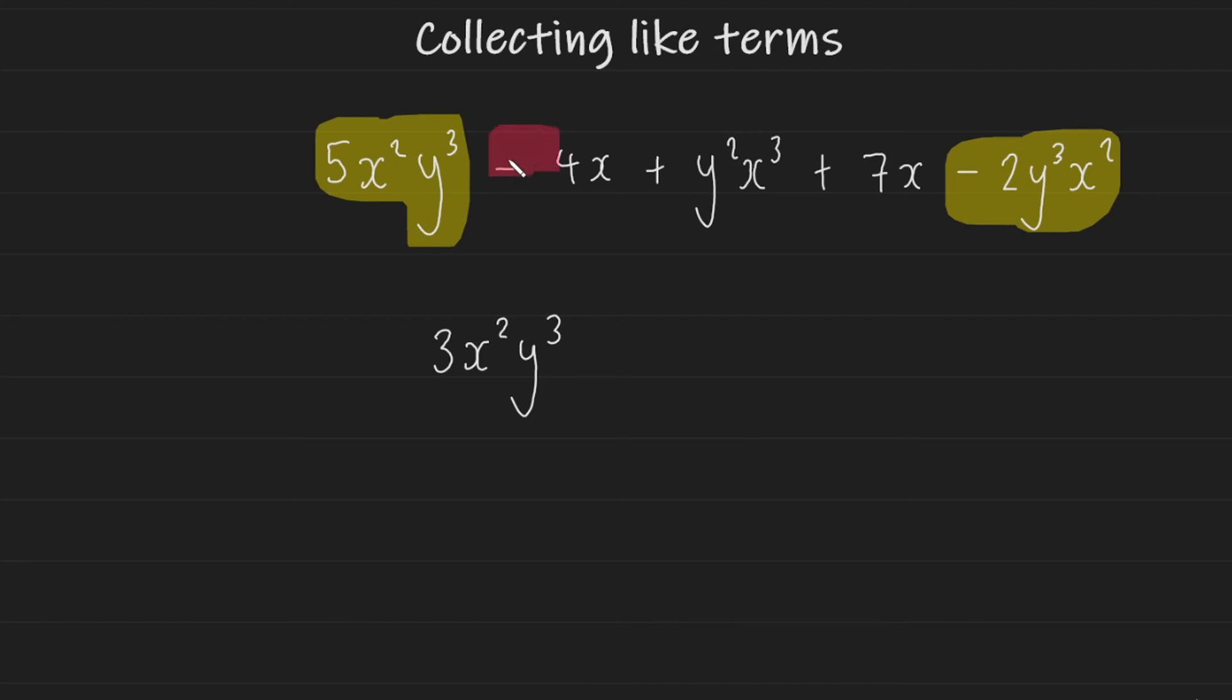Now I'm going to go for my x terms. So we have a minus 4x here and we have a plus 7x here. Adding those together, so minus 4x plus 7x should give me plus 3x.